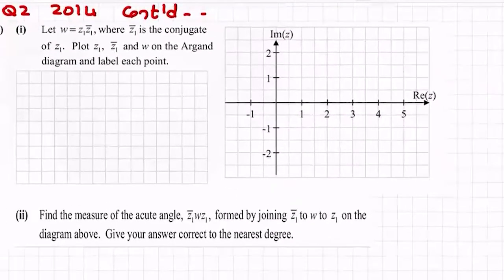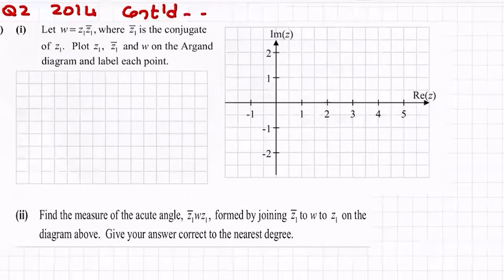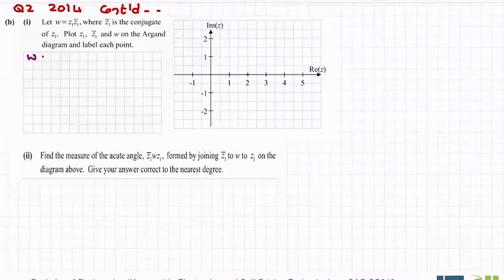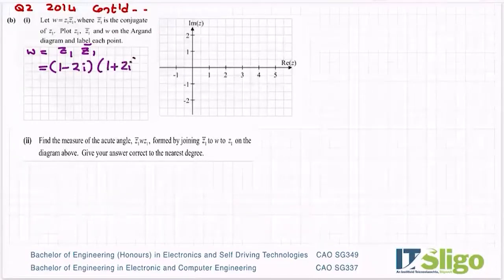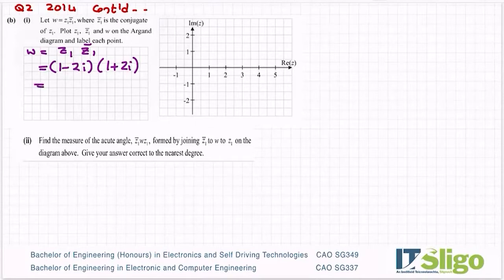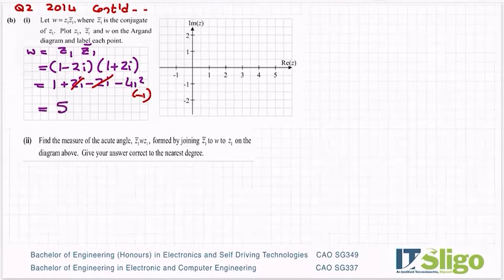Part b: let w equal z1 times the conjugate of z1. Plot z1, the conjugate of z1, and w on the Argand diagram, and label each point. So w equals z1 times z1 conjugate. z1 was 1 minus 2i, so its conjugate is 1 plus 2i. When I multiply these I get a real number: 1 plus 2i minus 2i minus 4i squared. The i terms cancel; substituting i squared equals minus 1 gives 1 plus 4 equals 5. So w equals 5, which is a real number.